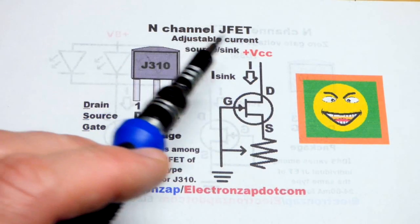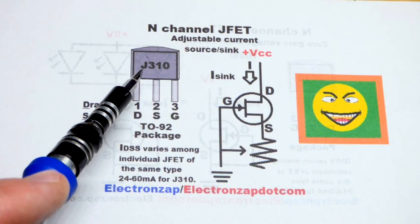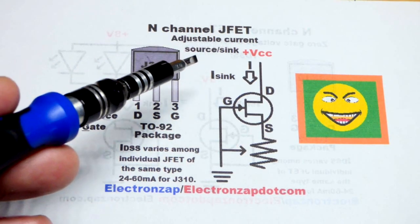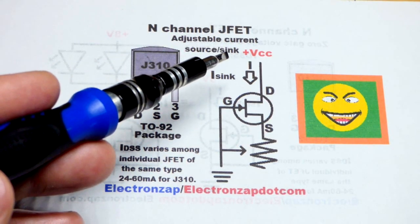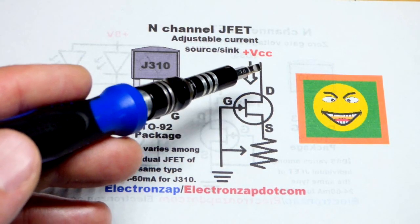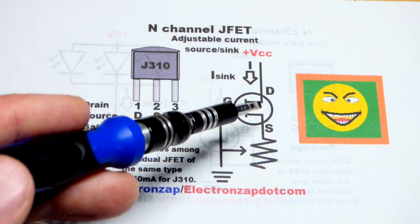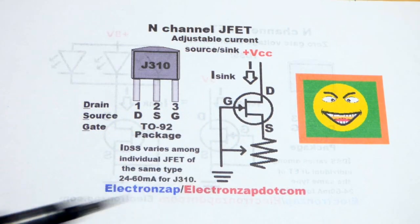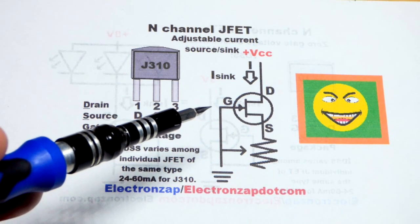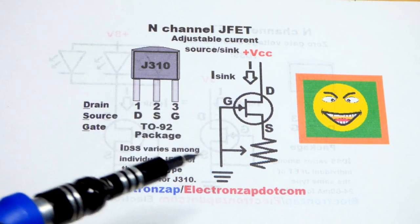In this video we're going to use an N-channel JFET, the J310, and we're going to make an adjustable current source. Technically it's a current sink - the load will be on this side of the transistor, so current is going to sink into the component as far as the load is concerned. But you can still say current source pretty much any time you set a current.